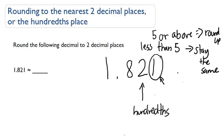So 1.821, this is approximately equal to 1.82. We're dropping this last digit. We don't care about that last digit because it is less than five. So 1.821 is approximately equal or rounds to 1.82 to the nearest hundredths place.